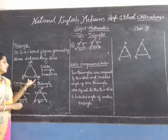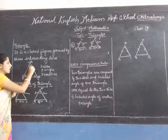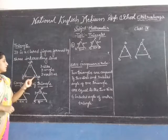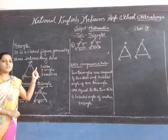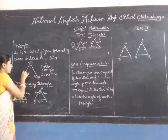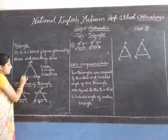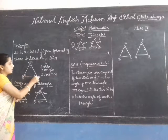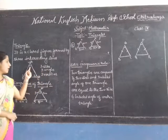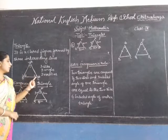So this is a triangle. A triangle consists of three sides — side AB, side AC, and side BC. Next, it consists of three angles: angle 1, angle 2, and angle 3.